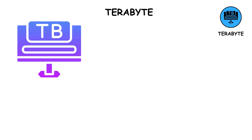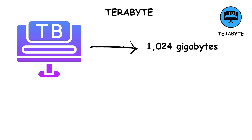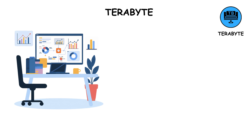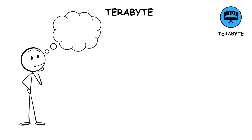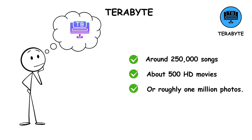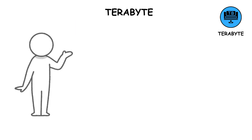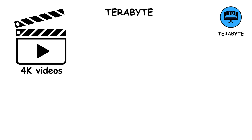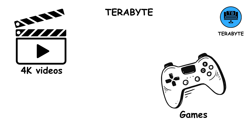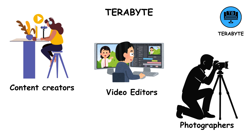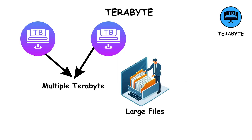A terabyte equals 1,024 gigabytes. Now we're talking about massive storage, like what you'd find in modern computers, external hard drives, or cloud servers. To imagine how much a terabyte can hold: around 250,000 songs, about 500 HD movies, or roughly 1 million photos. If you own a laptop with a 1 terabyte hard drive, that's a lot of space. Though with today's 4K videos and games, it can still fill up surprisingly fast. Many content creators, photographers, and video editors often need multiple terabytes to handle large files and backups.